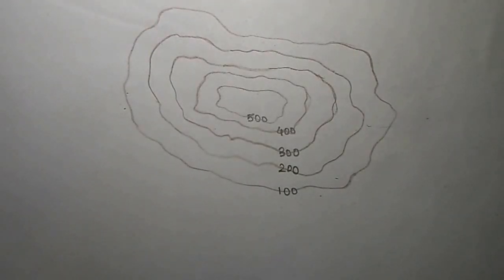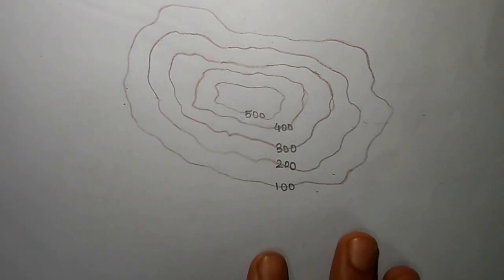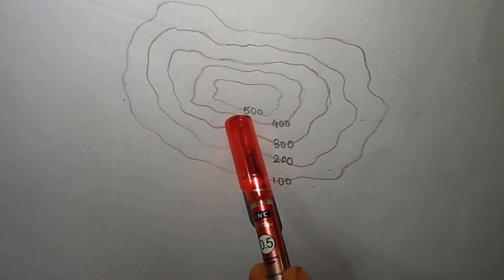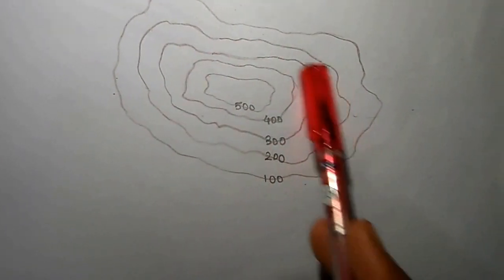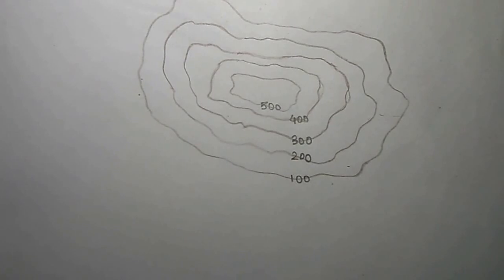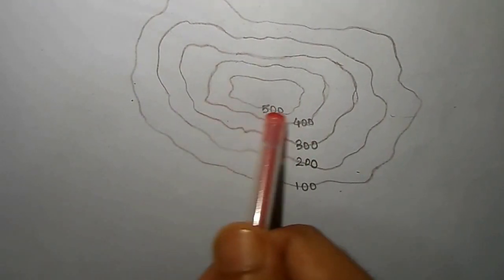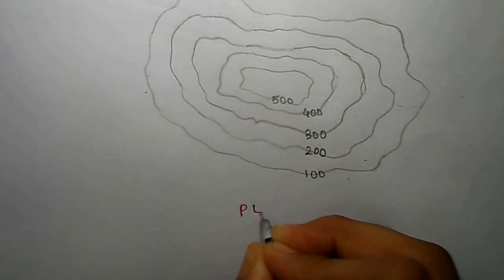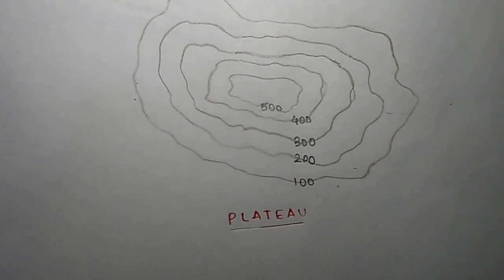Now I will explain how to find a plateau. This is the basic contour diagram for a plateau. What you find is a flat top and steep or gentle sides. This is basically a plateau — finding it is quite easy. You have a flat top and you can have either a steep slope or a gentle slope on the sides.